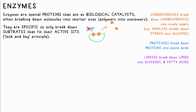They're specific because they work on a lock and key principle. The substrate — for example, the starch — binds to the enzyme's active site. We then call this a complex. However, this can only happen if the substrate is the right shape in order to fit the active site. In reality, they're incredibly complex shapes. These shapes here are just to represent them.